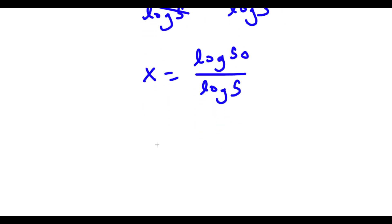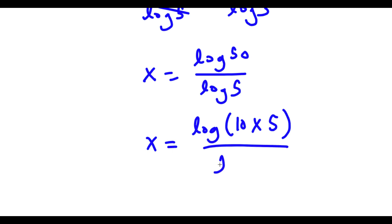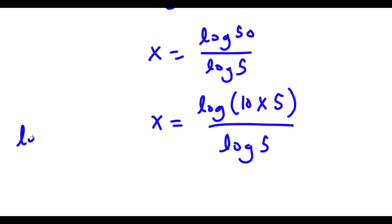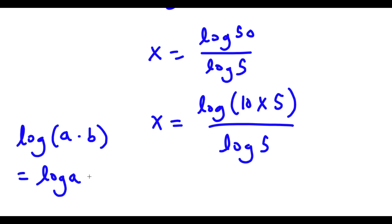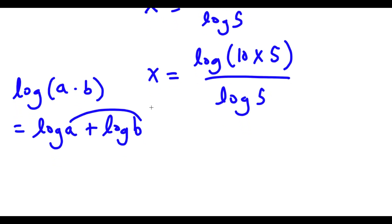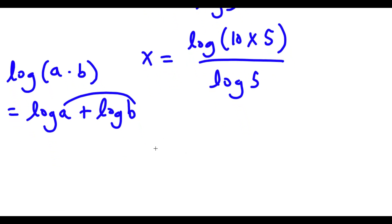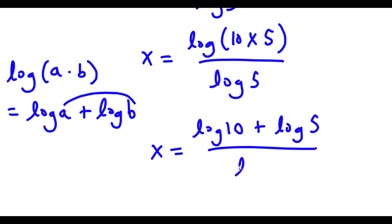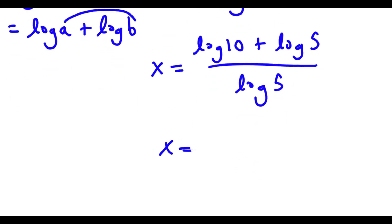Now log 50 is the same thing as log of 10 times 5, and I have this over log 5. If I have something in the form log(a times b), this is actually equal to log a plus log b. So log of 10 times 5 equals log 10 plus log 5. Since log 10 is equal to 1, I now have 1 plus log 5 over log 5.